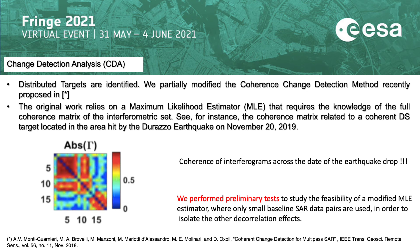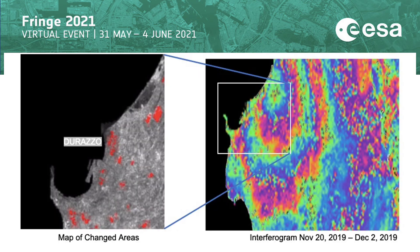We have done some preliminary experiments, and in this slide we have summarized very shortly the areas that were, using our approach, more significantly affected by changes during the period of analysis between June 2019 and January 2020. By concluding, we have proposed a method to analyze the areas subjected to changes, and we have discussed the implication of using a reduced set of interferograms for performing this coherent change detection analysis.